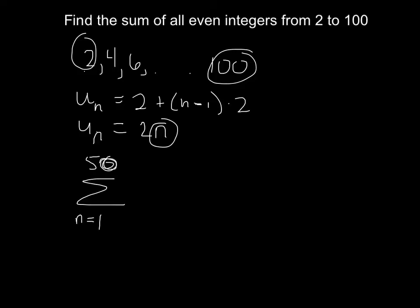Alright, and therefore we throw in 2n here, evaluate how you like, and you get 2,550.